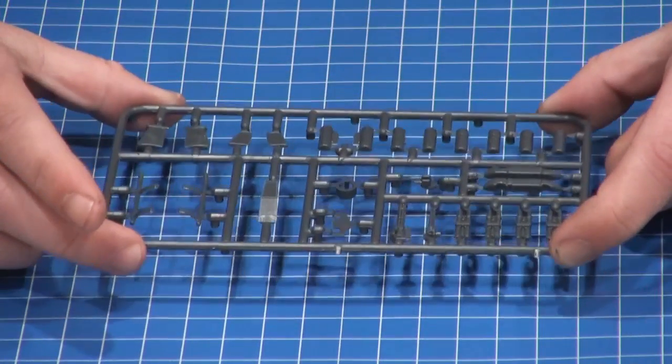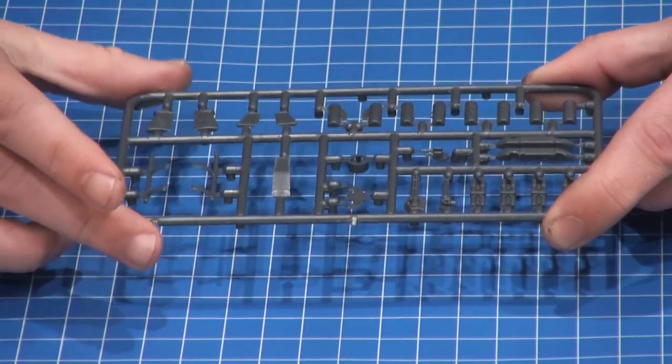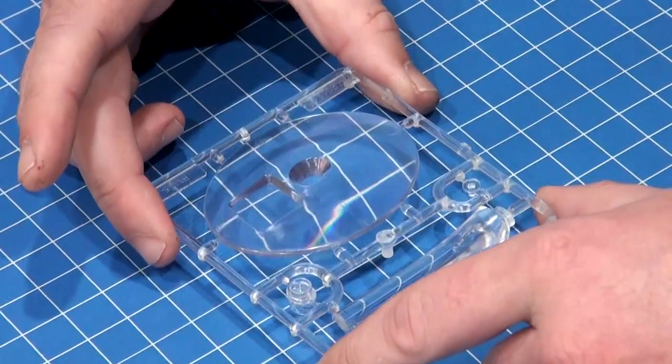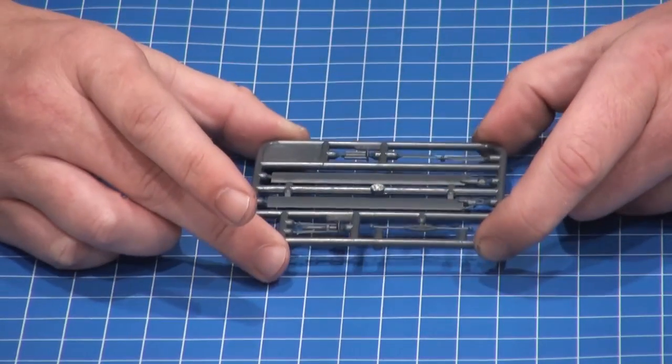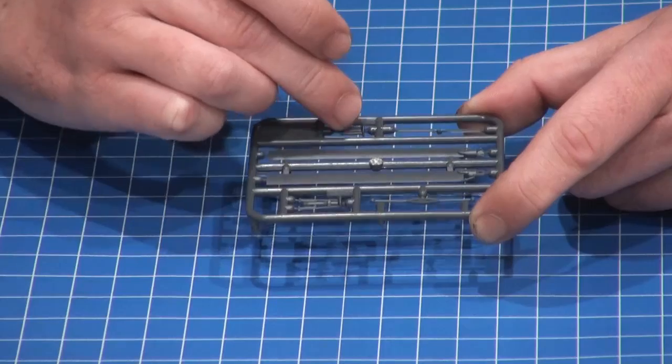The second sprue will hold most of the rest of your model so it will have things like your landing skids and your weapon systems. The third sprue is a flight stand and finally you'll have a sprue that will have your rotor system on it so your main blades, your tail rotor and the rotor hardware.